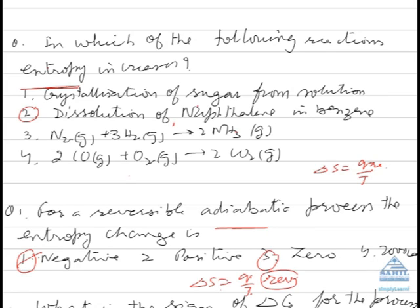Now we have seen that enthalpy and entropy together determines the spontaneity of the reaction. It is very difficult to study both the factors. So scientists came out with another thermodynamic function which was the free energy. It is the amount of energy available with the system to do useful work.